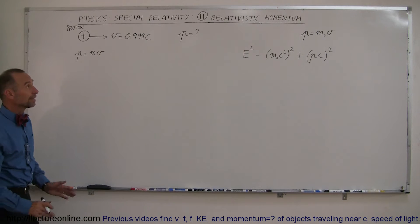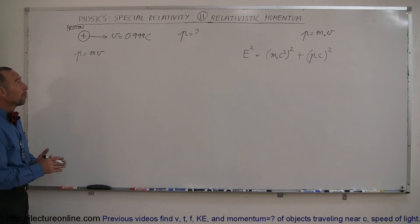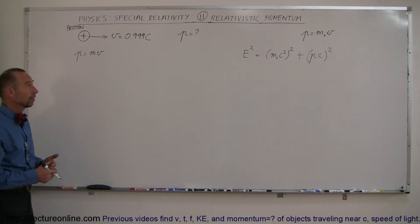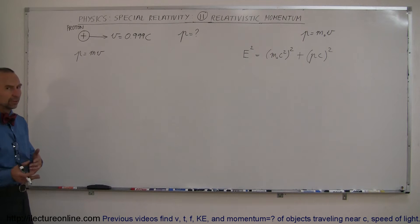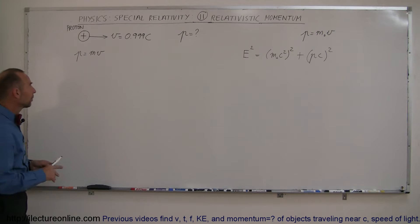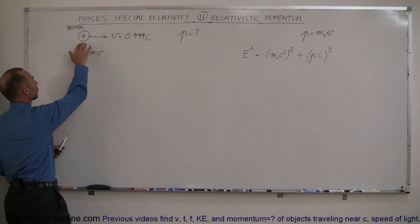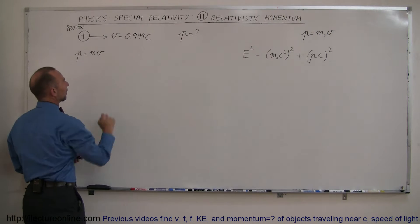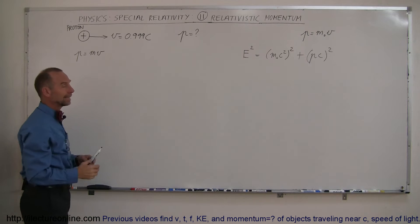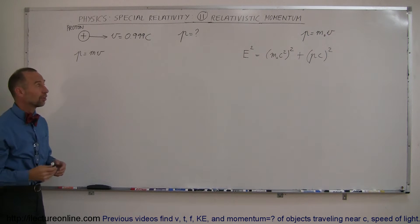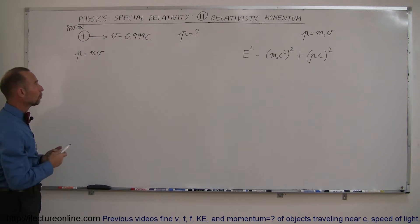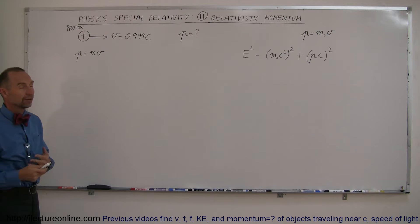Next, we're going to talk about the effects on momentum in the case of special relativity. As we did in the last example, we're going to take a proton, accelerate it to very high velocity — 99.9% of the speed of light — and calculate the proton's momentum.